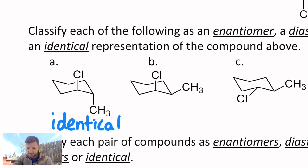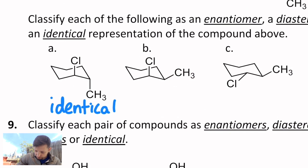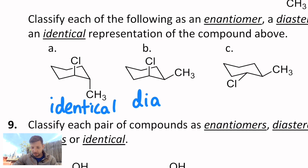However, when I get to B, I can tell, thinking about our past unit, we have an axial chlorine that's still axial, an axial methyl that became equatorial, but they're on the same spot. This would be a diastereomer of the original compound.